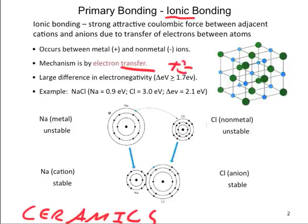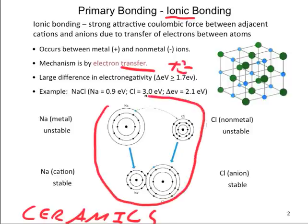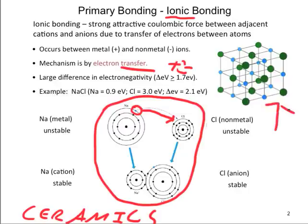Shown here is the formation of sodium chloride, or table salt. The sodium atom donates its lone valence electron to the chlorine, which needs one more electron to fill its valence shell, forming Na+ and Cl−. They stick together because of the opposite charges. Ionically bonded solids have a crystal lattice structure, as shown here for sodium chloride.